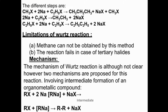Different steps are involved in the Wurtz reaction; the first step is the reaction of sodium with the first alkyl halide to give an alkane. There are some limitations: methane cannot be obtained by this method, and the reaction fails in the case of tertiary halides. The mechanism of the Wurtz reaction is not entirely clear; however, two mechanisms are proposed involving the intermediate formation of an organometallic compound.